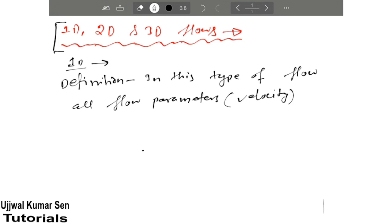we take example as velocity is one of the flow parameters are functions of time and one space coordinate only. So this is one of the way you can understand 1D flows but if we'll go in depth